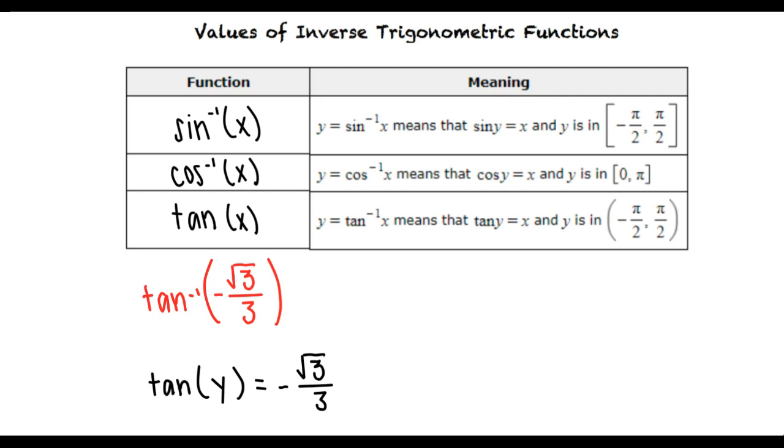Okay, well I know that tangent of negative pi over 6 equals the negative square root of 3 over 3. So our answer would be negative pi over 6, right? Yes, good job!